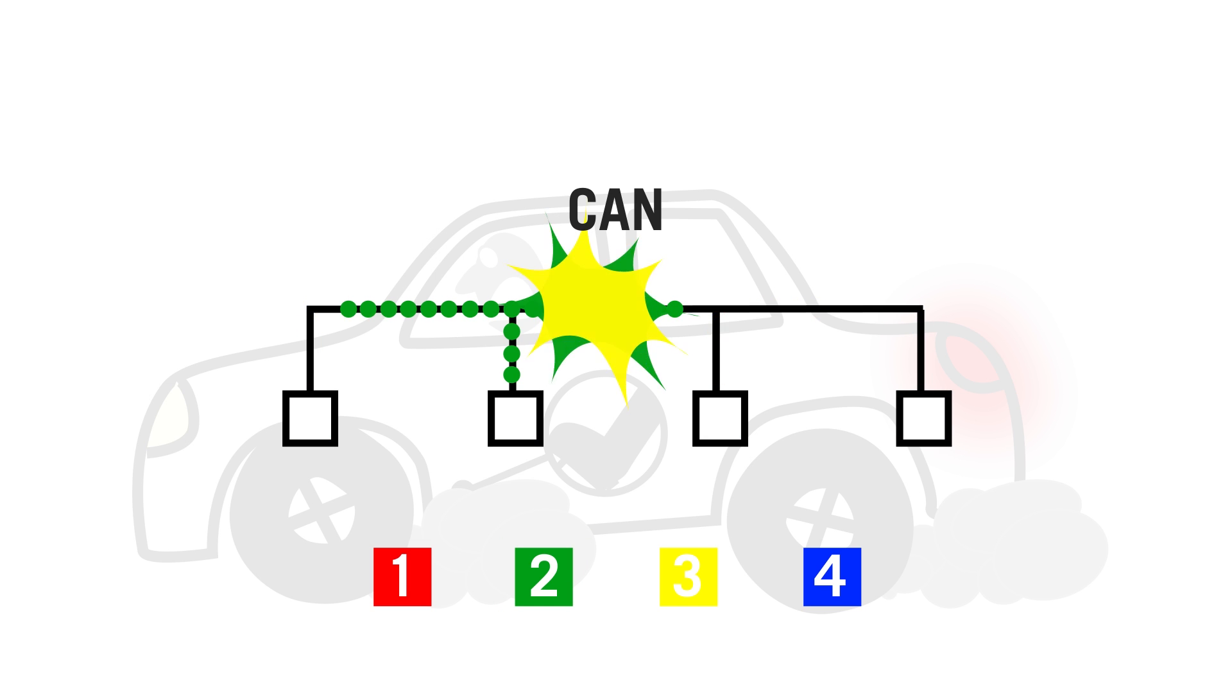In CAN, the collision can be resolved in real time, because the highest priority package will be sent first. There is no priority between the different units, and a unit can send a package with different priorities.